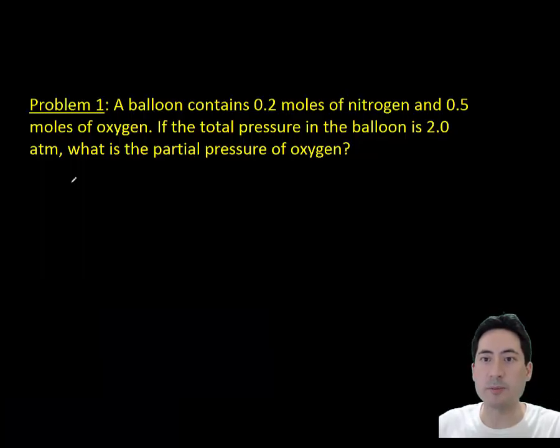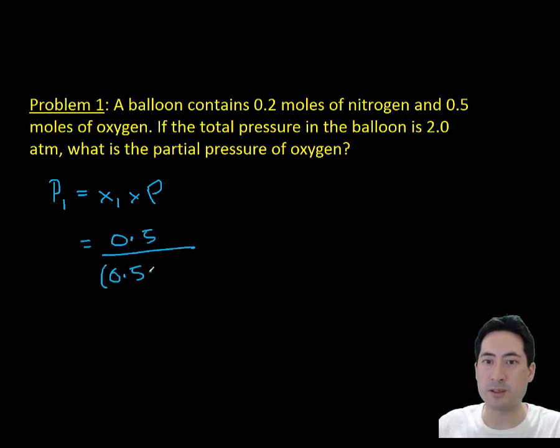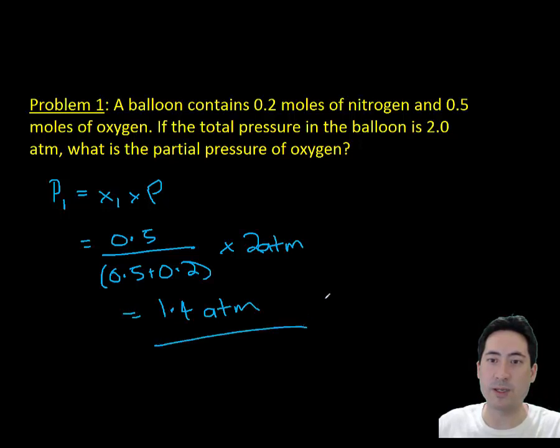Looking at a problem here. If a balloon contains 0.2 moles of nitrogen and 0.5 moles of oxygen, what's the total pressure in the balloon? The total pressure in the balloon is 2 atmospheres. How much pressure is the oxygen causing? The partial pressure of oxygen will be the total pressure times its percent contribution which is 0.5 of 0.7. Oxygen is contributing 1.5 atmospheres of pressure to this balloon.